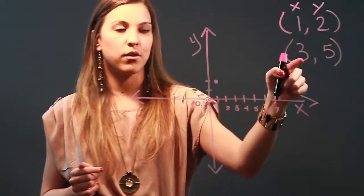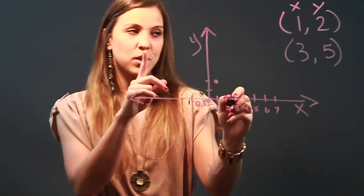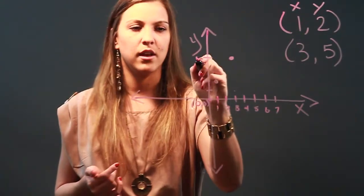Now to plot my second point, I've got to go to 3 on the x-axis: 1, 2, 3. And then I have to go up 5 to the y-axis. So 1, 2, 3, 4, 5, approximately right here.